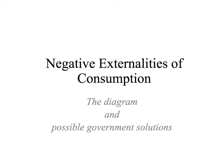Hey everybody, I hope you're doing well. Today we're going to take a look at the negative externalities of consumption — both the diagram and the possible government solutions to the market failure. I want to just take the mystery out of it. What's happening here? The consumption of something is causing an external cost. Negatives are costs.